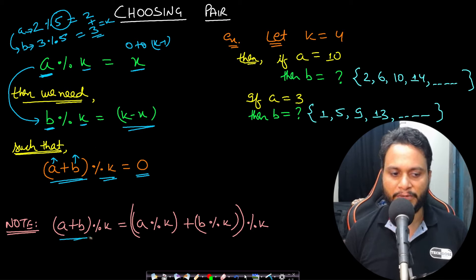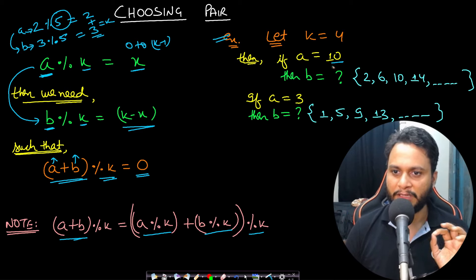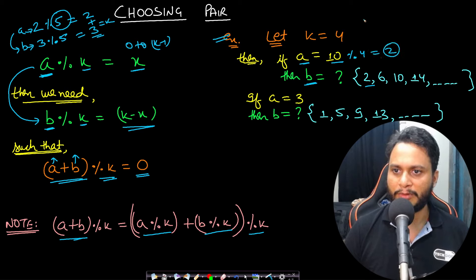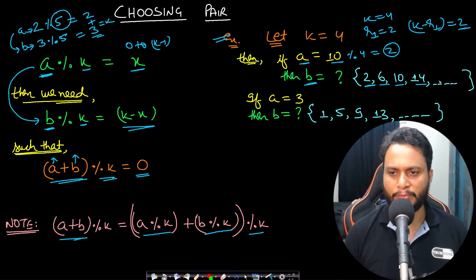According to modulo arithmetic: (a+b) mod k = ((a mod k) + (b mod k)) mod k. For example, with k=4 and a=10: 10 mod 4 = 2, so b must give remainder k−r1 = 4−2 = 2. Numbers like 2, 6, 10, 14 all give remainder 2 mod 4. For a=3, remainder r1 = 3 mod 4 = 3, so b needs remainder 4−3 = 1. Possible values of b: 1, 5, 9, etc.